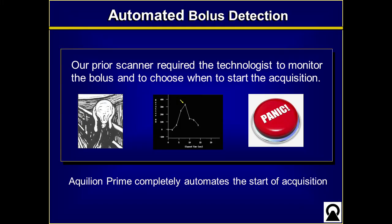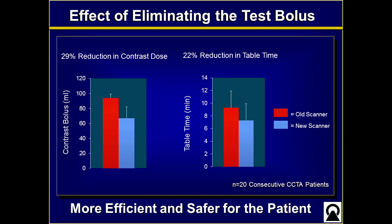We used something called a test bolus instead — many of you may use test boluses. The nice thing is on our new scanner, all of this is completely automated. We don't use a test bolus anymore; we use automated detection. As a result we use less contrast because we don't have to give contrast for a test bolus, and we are able to get through patients much more quickly. The scan time goes down, and the efficiency and safety improvements are things we really wouldn't have considered when choosing to upgrade our scanner.